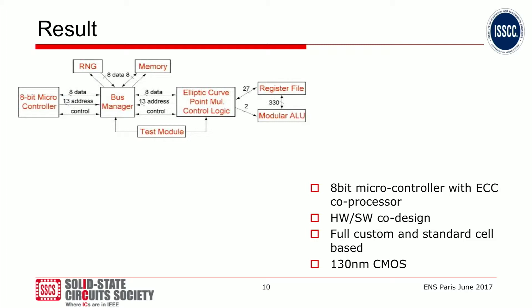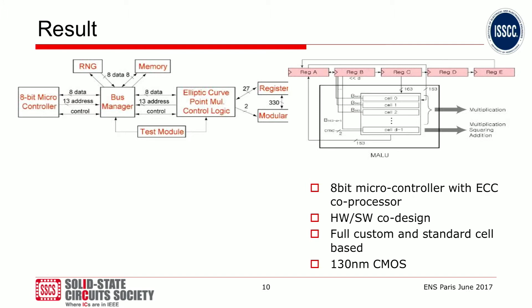In this case, it's the elliptic curve coprocessor. We have a general-purpose 8-bit microcontroller that might not need that much security, but the elliptic curve coprocessor really needs its security. You can call this a hardware-software co-design. We need a random number generator — a very important topic — and maybe a secure register file. The optimizations done at the arithmetic level require a data path of at least 330 bits, which is unusual in normal arithmetic.